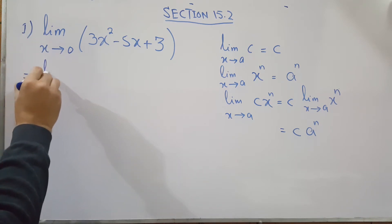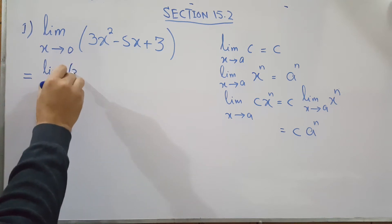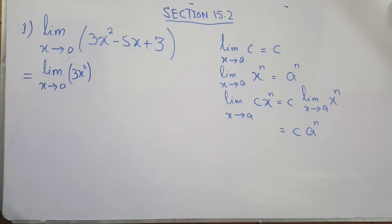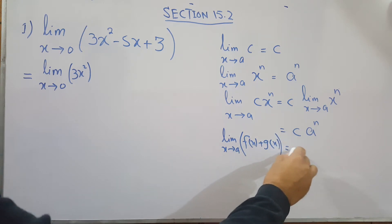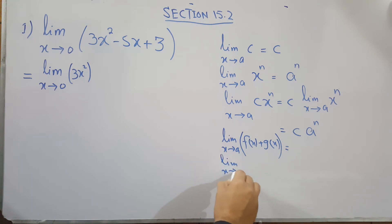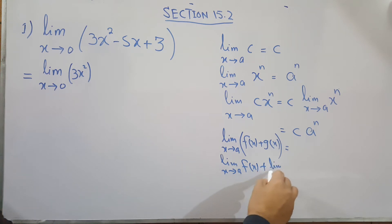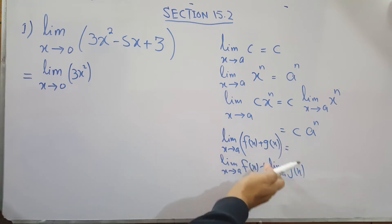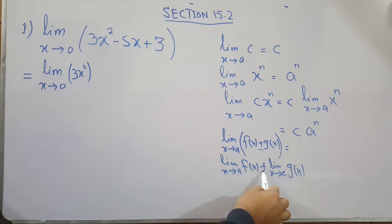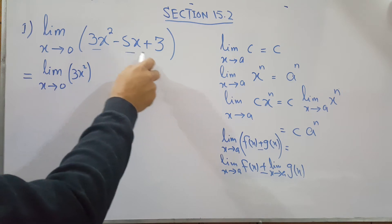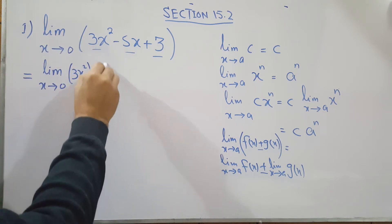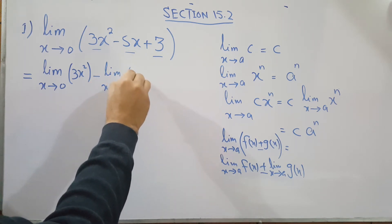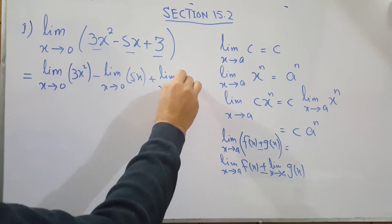Here we will apply those rules for limit x approaches to zero. One more rule we can use is that if the limit is applied on different functions that are added or subtracted, you can apply the limit separately on each one. So if there is addition or subtraction between them, you apply the limit individually to each term.